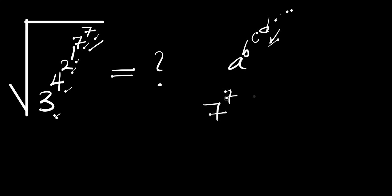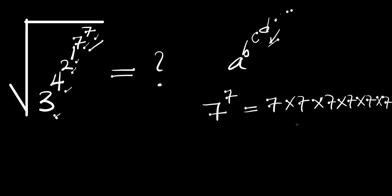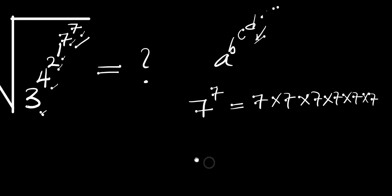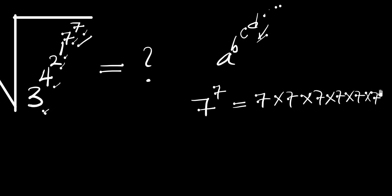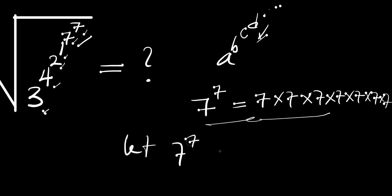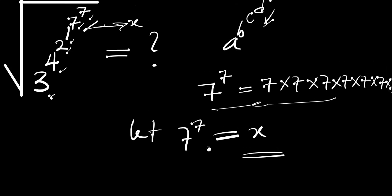So we have 7 power 7, which simply means 7 into 7 places — that is 1, 2, 3, 4, 5, 6, then add another one making it 7. To find this number right away is going to be a bit difficult, so we can easily replace these with x. Let 7^7 equal x. That means these first two numbers we are going to replace with x.